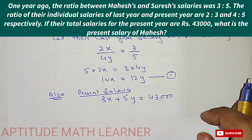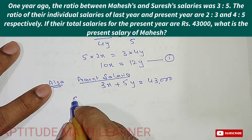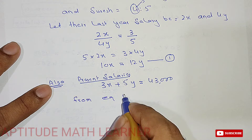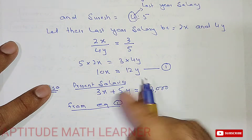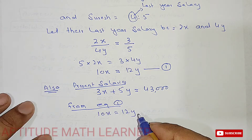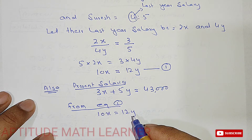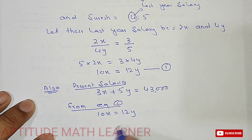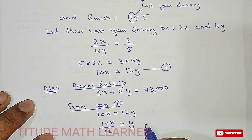From Equation 1, we have 10x = 12y. Solving for y: y = 10x/12. Now we substitute the value of y into Equation 2.